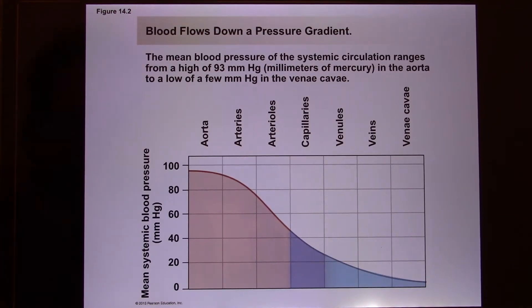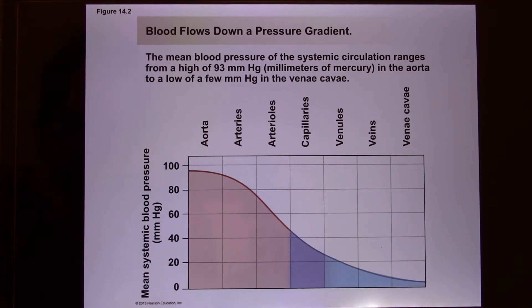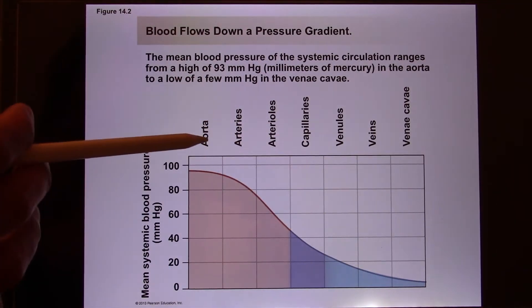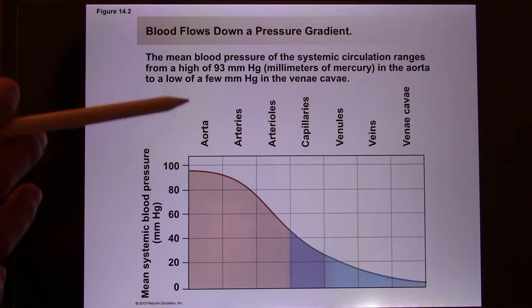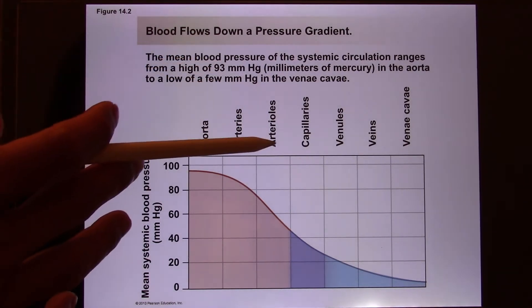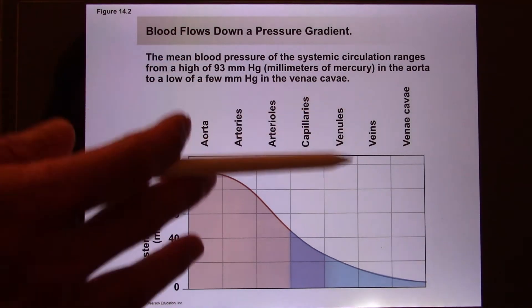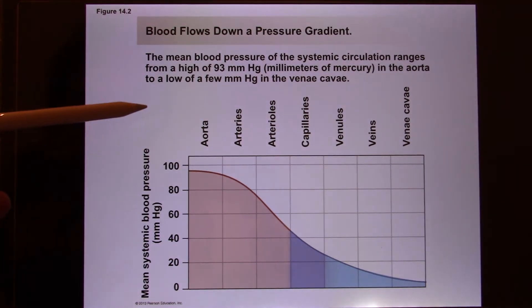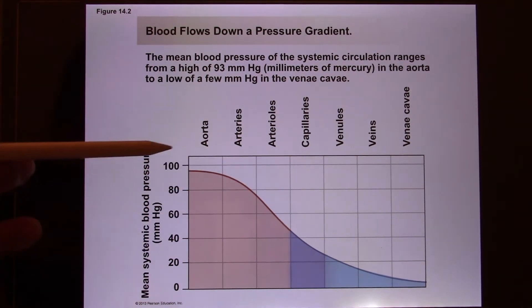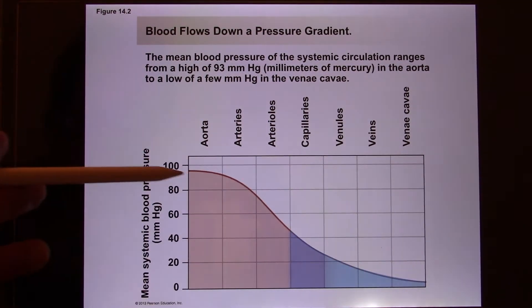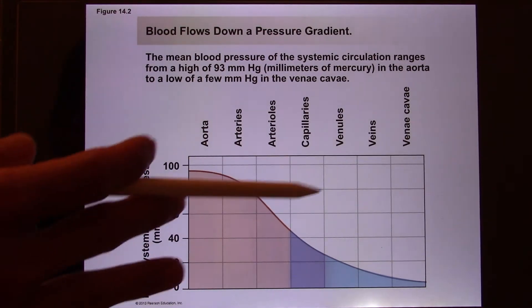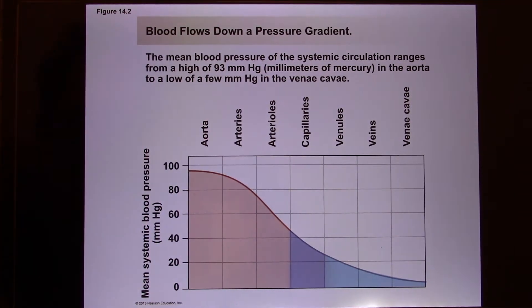The pressure comes from the left ventricle. When the left ventricle pressure increases, you're going to have a bigger pressure gradient and can send more blood out. Through all the pipes — from the aorta, artery, arterioles, capillary, venules, veins, eventually vena cava — the pressure slowly decreases because they are further and further away from the pump.